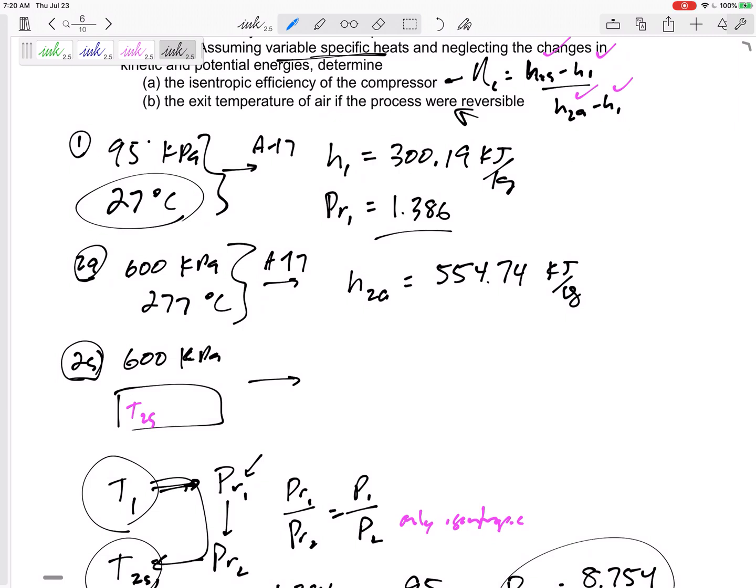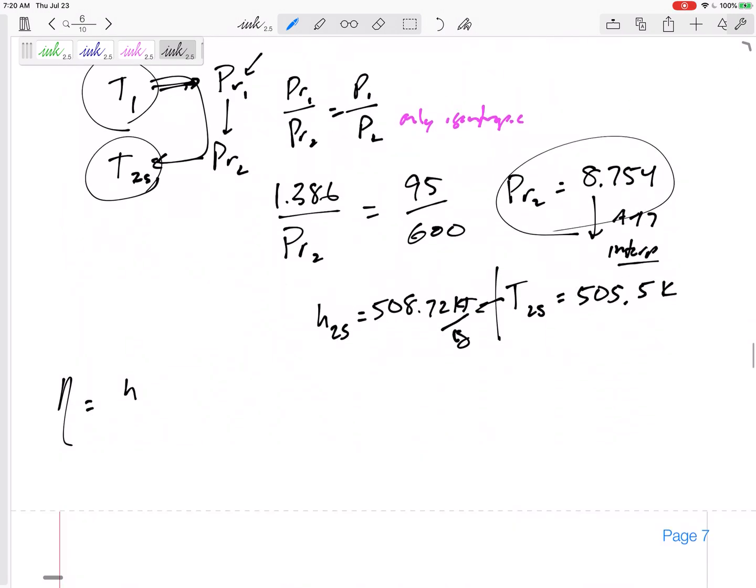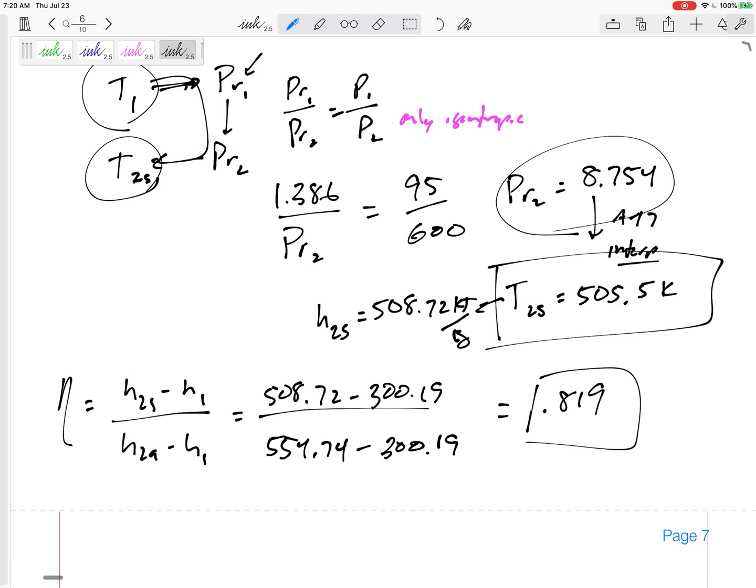Sorry, so I already solved T part B. I already solved part B. This is the temperature 505, part A. H2S minus H1 over H2 actual minus H1. 508.72 minus 300.19 over 554.74 minus 300.19, efficiency of 0.819 or 81.9%.